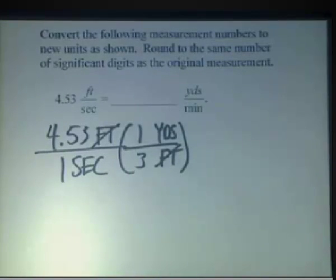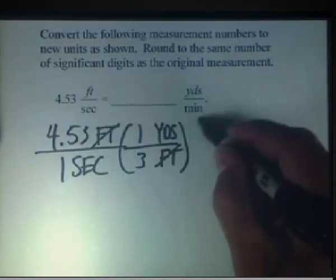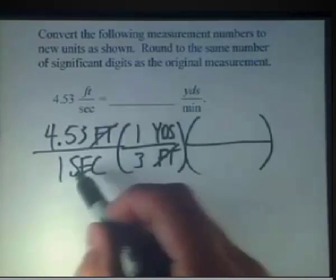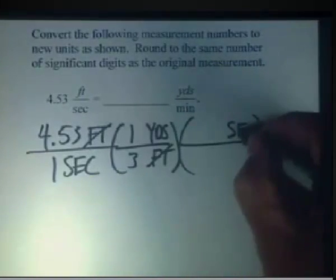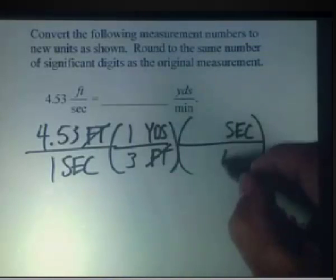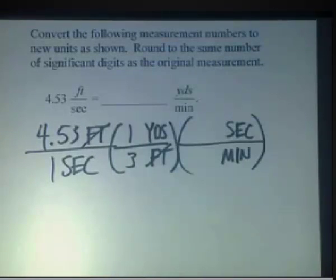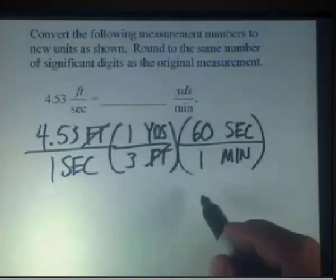Now we've got to convert from seconds to minutes. We'll set up our unity fraction over here. To get the seconds to cancel, we're going to go opposite, and once we've done that, we'll put our desired increment, which is minutes. In one minute there are 60 seconds.